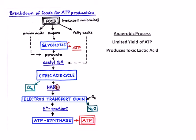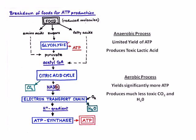The second part of the process requires oxygen and is referred to as aerobic respiration. It produces significantly more molecules of ATP, and its waste products are carbon dioxide and water — two substances the body easily excretes. Both these processes occur in the mitochondria.